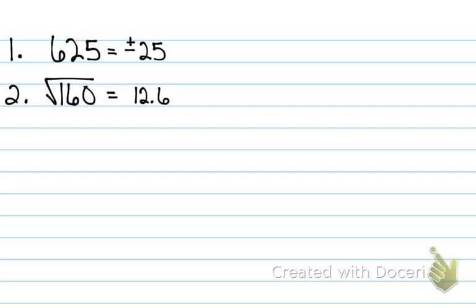Hit the S to D button on your calculator. It'll tell you 4 times the square root of 10. But hit the S to D button and round it to the nearest integer. So the answer, yes, is 4 times the square root of 10. But when it says round or approximate to the nearest integer, that's when you write 13. So if it says integer, give me the decimal. If it says simplest form, you leave it under the radical.